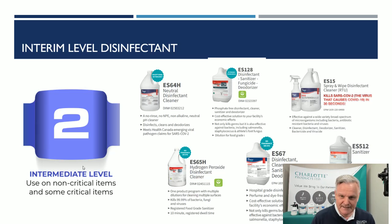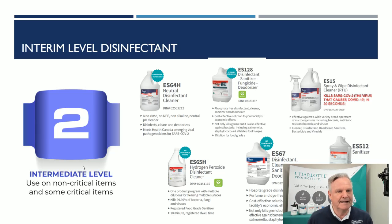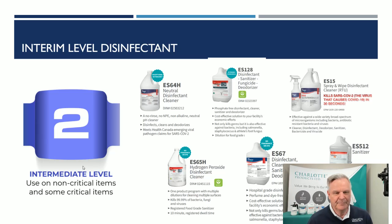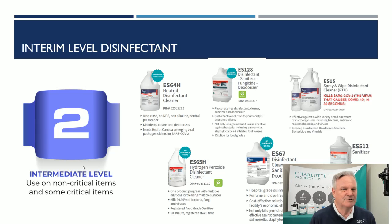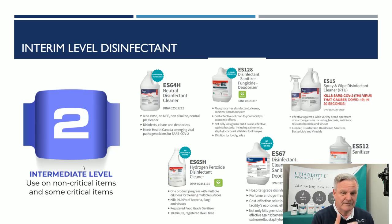For intermediate-level disinfectants — non-critical and some critical items — there's a wider array. Generally in the disinfectant world, more detergency means lower kill claims, while middle-of-the-road products offer both. High-level products have very light soil load tolerance but very high kill claims. At the intermediate level: ES64H is our neutral cleaner disinfectant in Canada with a DIN number, rated for SARS-CoV-2. ES128 is our disinfecting sanitizer. ES15 is our number one seller, ready to use. ES65H is hydrogen peroxide-based with no fragrance or dye. ES67 is for the U.S., and ES512 is our food service sanitizer.